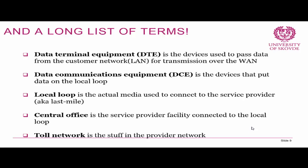Moving on quickly — you should look at these terms in the literature. We also need to know about the central office, which is the service provider facility connected to the local loop. So you would own or lease the customer premises equipment, which includes the DTE and the DCE — possibly the same device or wiring closet. Using the local loop, you connect to the central office. Everything within the service provider network is called the toll network — basically where it costs you money to be.